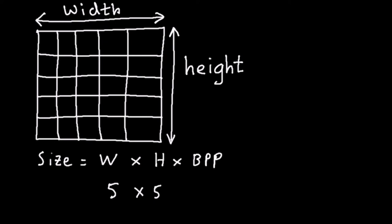Now to actually calculate the size of the image, we need to also multiply that number by the number of bits per pixel. So supposing we have 8 bits per pixel, then we multiply by 8 and that would give us 200 bits for the size of our image.